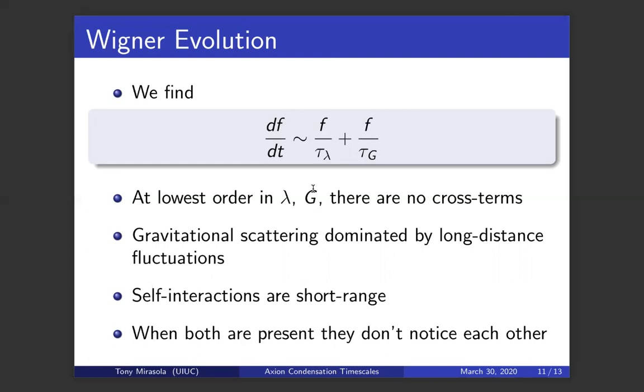The result is that during the condensation process, at least at the beginning, these two processes don't notice each other. So in order to calculate the timescale for the condensation into the thermal phase, we can basically calculate these two timescales separately and then just look at which one is faster.